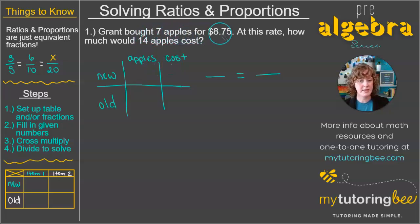Okay, so in the ratio that they gave us already, they gave us seven apples. So that's going to go here. That's the old number of apples. And then the cost of those was 8.75. So that's going to go here in the cost column and again in the old row. Now we are going to talk about the new question that is being asked. At this rate, how much would 14 apples cost? Well, that 14 is going to go in the apples column. And then this is our unknown cost. So that's where we're going to put our variable.